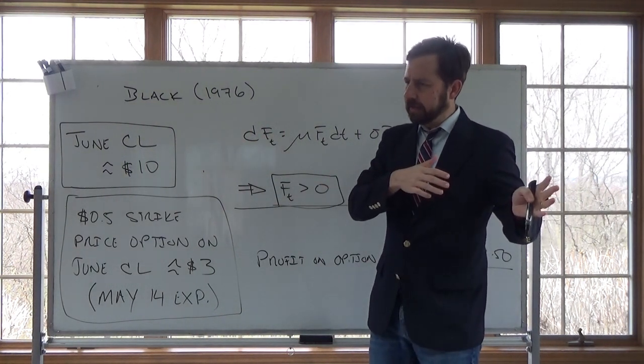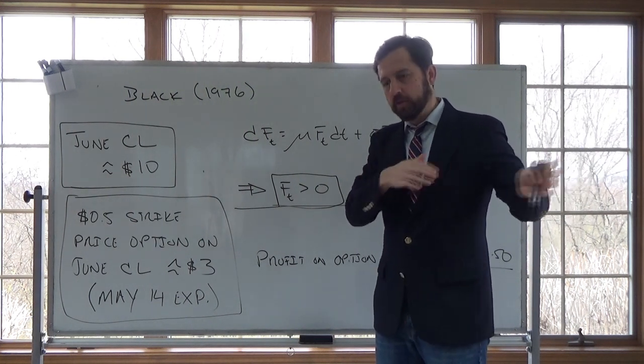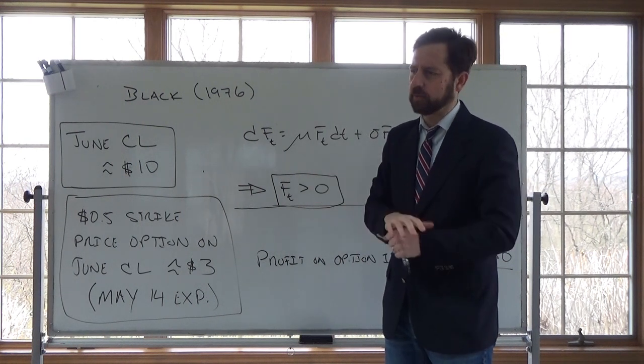In the previous video I did last night, I mentioned a put option on June crude oil with a $0.50 strike price. I mentioned last night its price was $0.20, implying you would profit if you bought this put option and crude oil fell below $0.30.